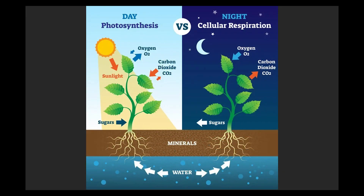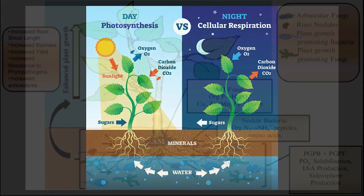3. Plant respiration is the process of breaking down sugars produced during photosynthesis to release energy for various cellular activities. Unlike photosynthesis, which occurs in the presence of light, respiration occurs continuously, both during the day and night.